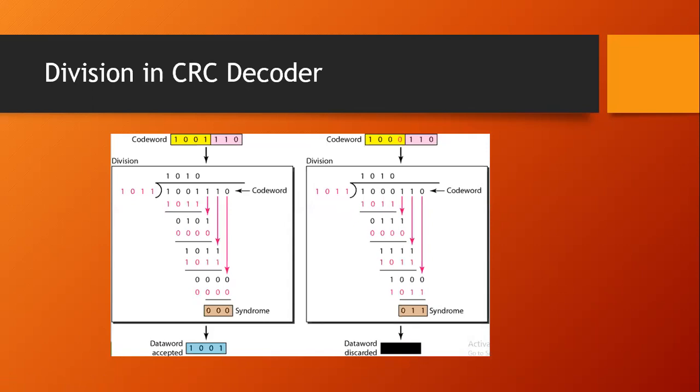On the right hand side, you can see the same division process but with a corrupted code word. Instead of 1001110, the fourth bit is corrupted and the code word becomes 1001100. At the checker side, the same division takes place, but the syndrome comes out to be 011 instead of 0. Since the syndrome is not 0, the data word is discarded at the receiver side.